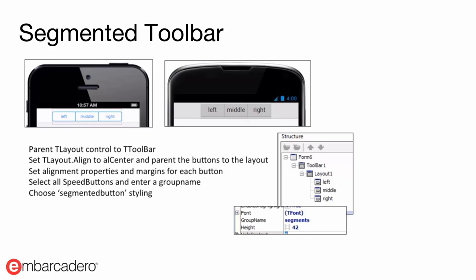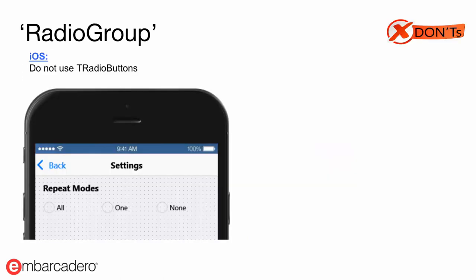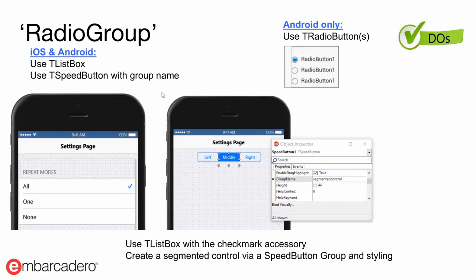There's a group property on TSpeedButton that you want to define — you can name it whatever you like — and then you select from the segmented button styling to style a TSpeedButton as a segmented control. There is no concept of a radio group on iOS, so you should not be using radio buttons. Instead, for iOS and Android you should use either a TListBox with the checkmark accessory for selected items, or set up a TSpeedButton with a group name to create a segmented control. On Android specifically you could also use radio buttons as they are common there, but not on iOS.